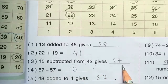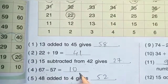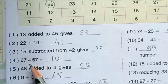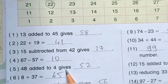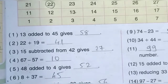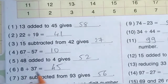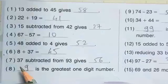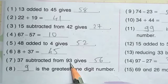Next, fourth one: 67 minus 57 is equal to 10 — यह भी tables में से कर सकते हैं, या फिर 7 minus 7 zero and 6 minus 5 is equal to 1. Fifth one: 48 added to 4 gives — answer मिलेगा 52. Sixth number: 8 plus 37 is equal to 45.